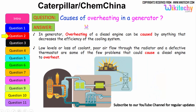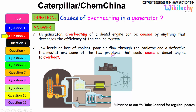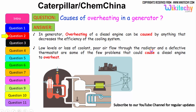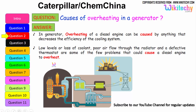Let's move on to the next question: causes of overheating in a generator. In a generator, overheating of a diesel engine can be caused by anything that decreases the efficiency of the cooling system. It can be due to the loss of coolant, low levels of coolant, poor air flow through the radiators, and a defective thermostat — these are some of the few problems that could cause a diesel engine or generator to overheat.